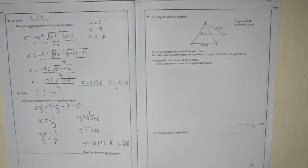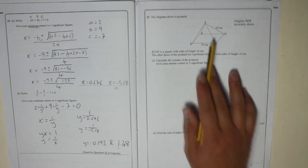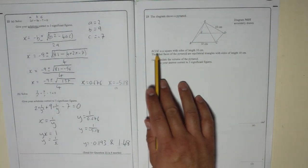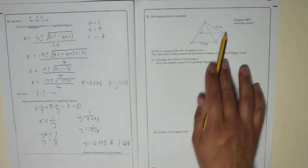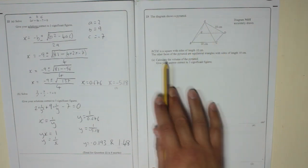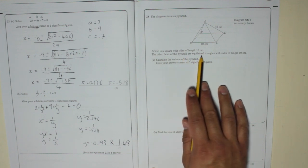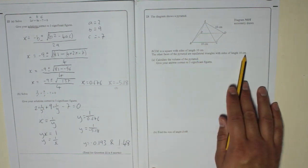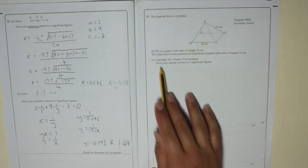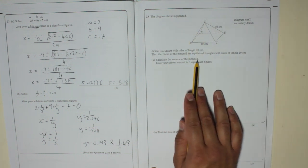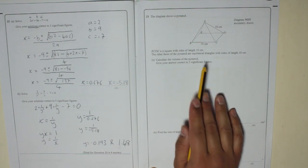Right, question 23. The diagram shows a pyramid. BCDE is a square with sides of length 10 centimeters. That's the bottom, BCDE. Square and it's all 10. The other faces of the pyramid are equilateral triangles with sides of length 10 centimeters. So everything's 10. Calculate the volume of the pyramid. Give your answer correct to three significant figures. Don't forget that.